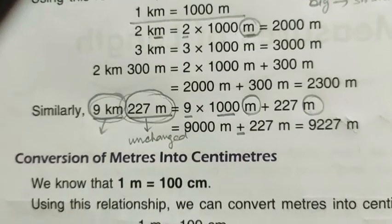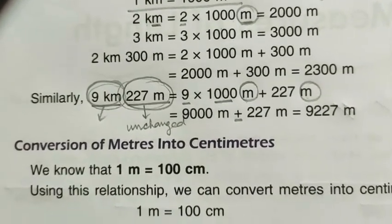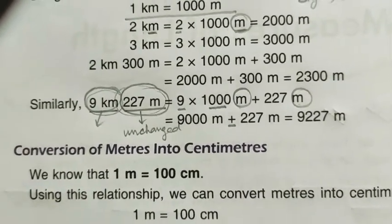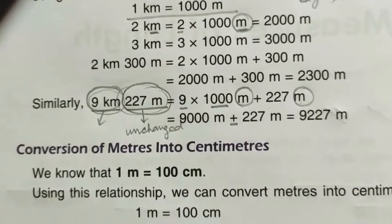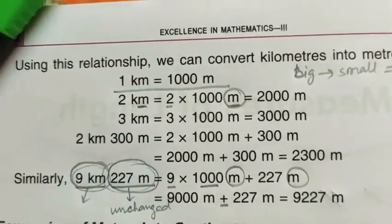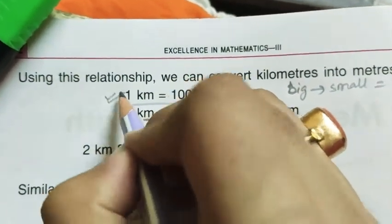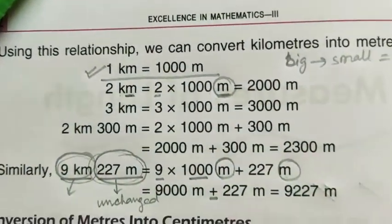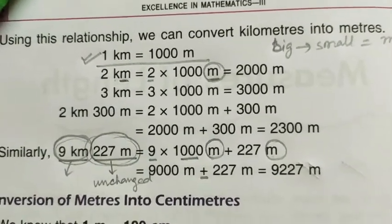This is the conversion of kilometer into meter. The main formula is: one kilometer is equal to one thousand meters. Whenever we convert big to small, we multiply by one thousand.